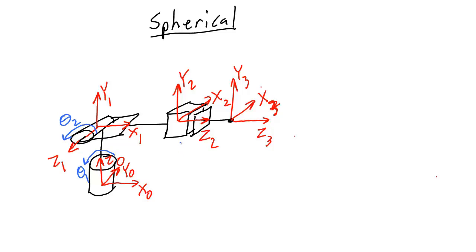Now I'm not quite done yet, because I haven't labeled the link lengths. So I'll write a1 on the first link, a2 on the second link, and a3 on the third link. And then I'm done drawing the kinematic diagram for the spherical manipulator.